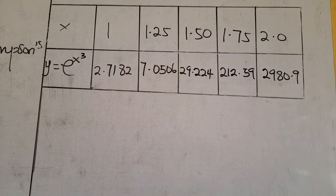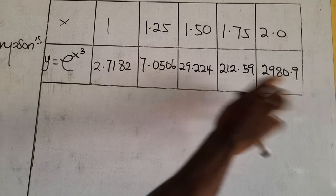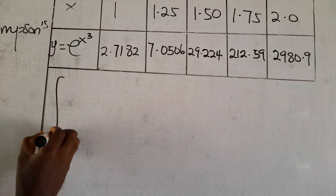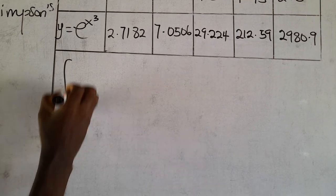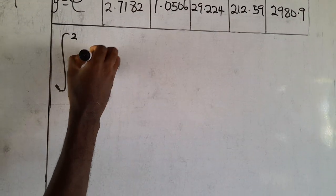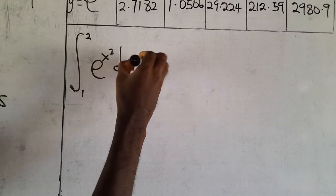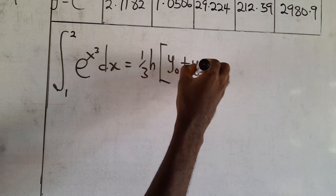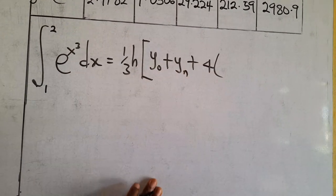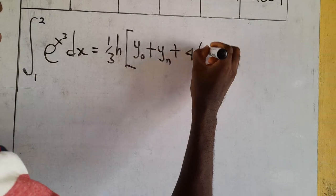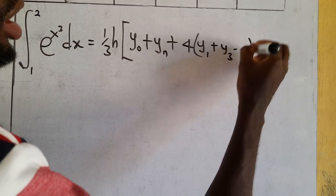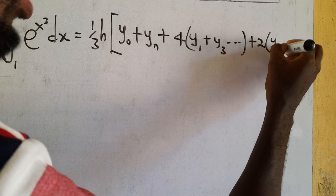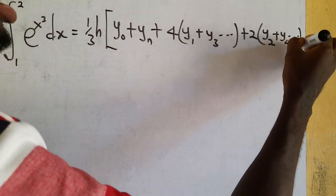Substituting all x values into e^(x³) gives the corresponding y values. Simpson's 1/3 rule says the integral from 1 to 2 of e^(x³) dx equals (1/3)h times [y₀ + yₙ], plus 4 times all odd-position y values (y₁ + y₃), plus 2 times all even-position y values (y₂).